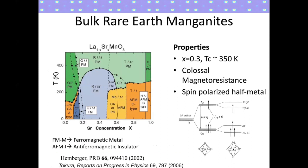The bulk manganites have been studied for a very long time. This is the phase diagram where, as a function of strontium doping or hole doping, you can stabilize very different magnetic and electronic phases. If you start from lanthanum manganite and increase the strontium doping to about 30%, the ground state is a ferromagnetic metallic state, and going up in temperature to about 350 Kelvin you transition from ferromagnetic metal to paramagnetic metal. You can also change the bandwidth by replacing strontium with calcium, giving a high-temperature magnetic insulating phase.